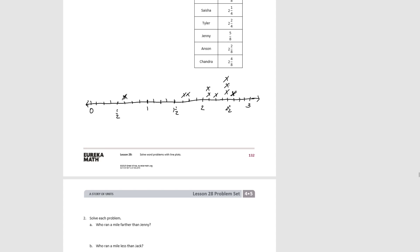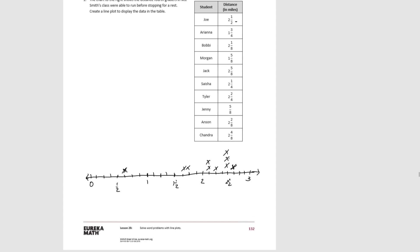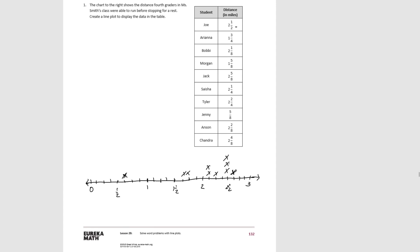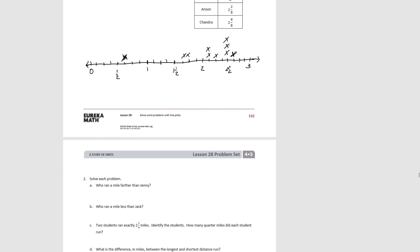For question number 2: Who ran further than Jenny? Let's go back and see what Jenny did — she was at 5 eighths, our lowest number. If we count 1, 2, 3, 4, 5, 6, 7, 8, 9, we see all of the other 9 students ran farther than her.